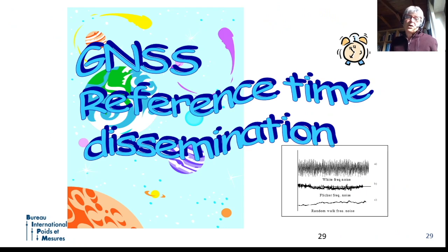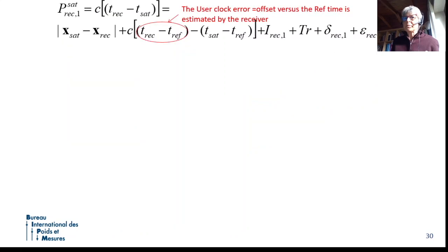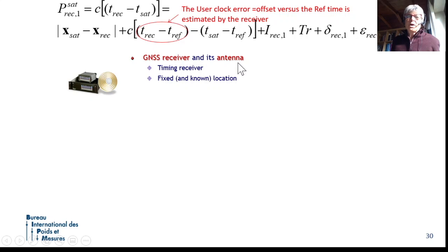We abandon this topic because we want to come back to the fact that global navigation satellite systems disseminate time. So, we said, again, the same equation, your receiver, even if you don't know, is able to estimate the offset between the clock of the receiver with respect to the reference time of the system. Let's suppose you have a GPS receiver. You can estimate the offset of your clock with respect to the GPS time.